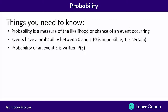So if we were going to write down the probability of throwing tails, we might write P for probability, and then in brackets we'd write 'throw tails' or just 'tails'. This doesn't matter so much for your answers, but if you ever see this written in a question, just know it means the probability of some particular event happening.